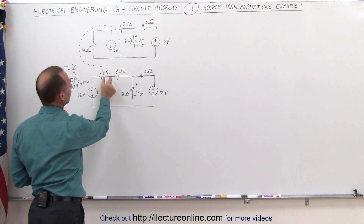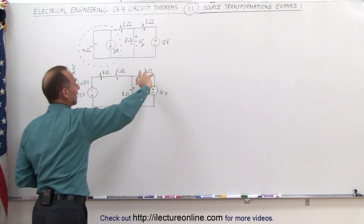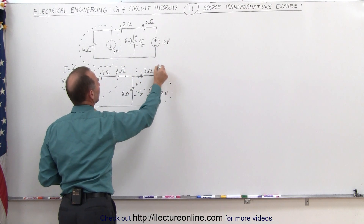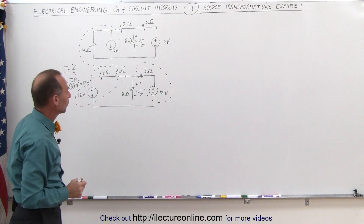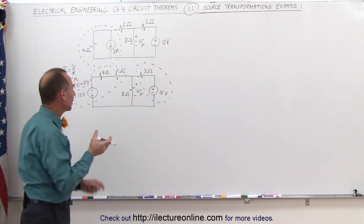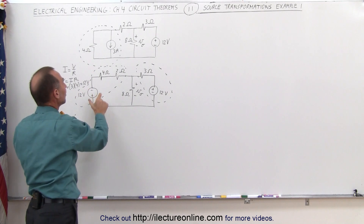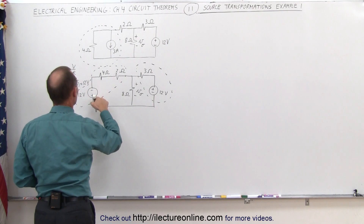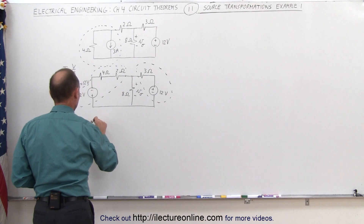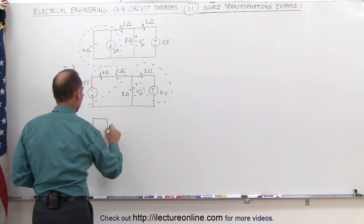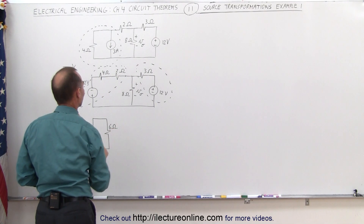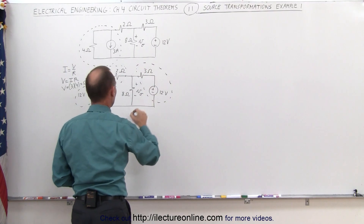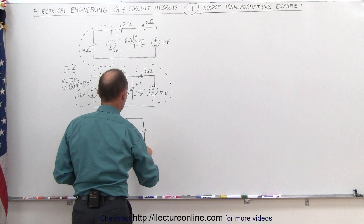The next thing we're going to do is combine these two, which becomes a 6 ohm resistor. Now we're going to take this section right here — drawing a circle around it — and we're going to turn that into a current source and a parallel resistor. You may wonder why we'd do that when we just changed it from a current source to a voltage source. The reason is this way we can combine those two resistors, then go back and replace it again with a current source. So we have a 6 ohm resistor and a 12 volt voltage source. The 6 ohm resistor will now be in parallel — notice 4 plus 2 is 6 — and we still have the 8 ohm resistor.